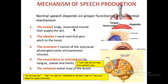The motor is all about the lungs and associated muscles that supply air. The vibrator is all about the vocal cord that gets pitched to the tone. The resonator consists of the oral, nasal, pharyngeal cavity, and paranasal sinus. The fourth spot, the enunciator or articulator, includes lips, tongue, palate, teeth — whatever is in our mouth. And the last one is the initiator, which is the motor area of the brain where the concept and message are decoded. These are the five different spots of mechanism of speech production.